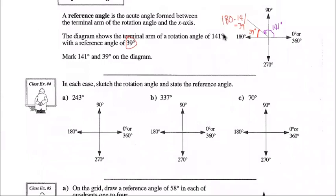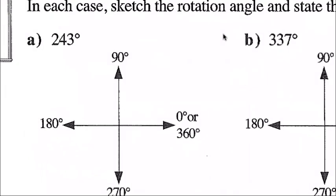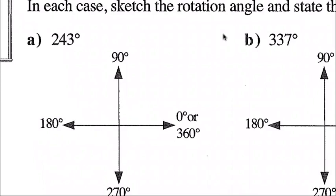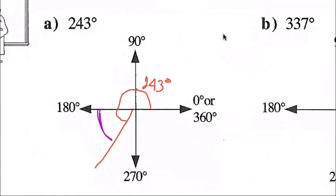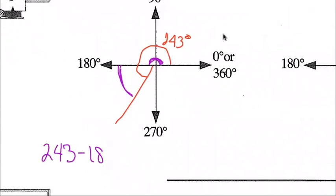Example four: sketch the rotation angle and state the reference angle. For 243 degrees — start on the positive x-axis, go counterclockwise: there's 90, there's 180, and 180 plus some gives 243 degrees. Label that 243 degrees. The reference angle is from the terminal arm to the nearest x-axis, so I eliminate the 180-degree portion: 243 minus 180 equals 63 degrees.